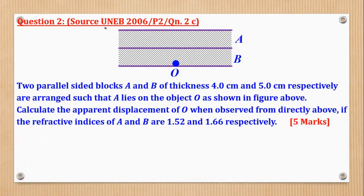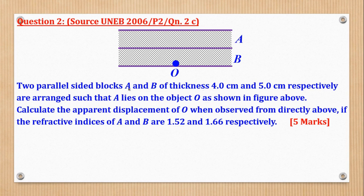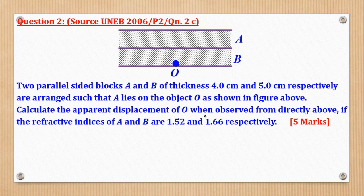Question 2 from UNEB 2006 Paper 2: Two parallel-sided blocks A and B of thickness 4 cm and 5 cm respectively are arranged such that A lies on the object O. Calculate the apparent displacement of O when observed from directly above, if the refractive indices of A and B are given. Real depth for A is 4 cm and for B is 5 cm. Total apparent displacement = 4(1 − 1/NA) + 5(1 − 1/NB).